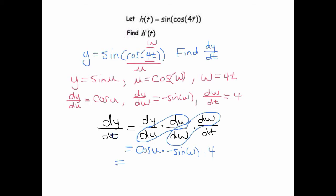So u is cosine of w, so that must mean I'm going to write this as cosine, and I'm going to replace the u with cosine of w, times negative sine of w times 4.